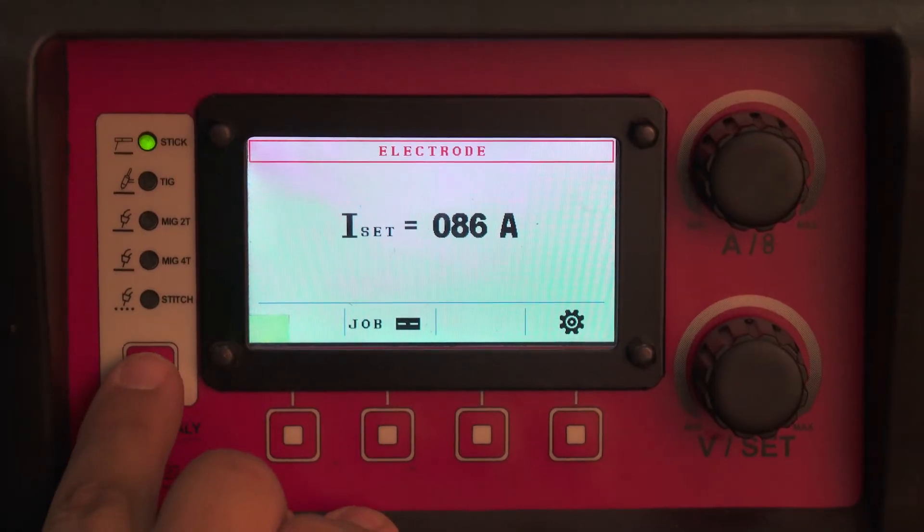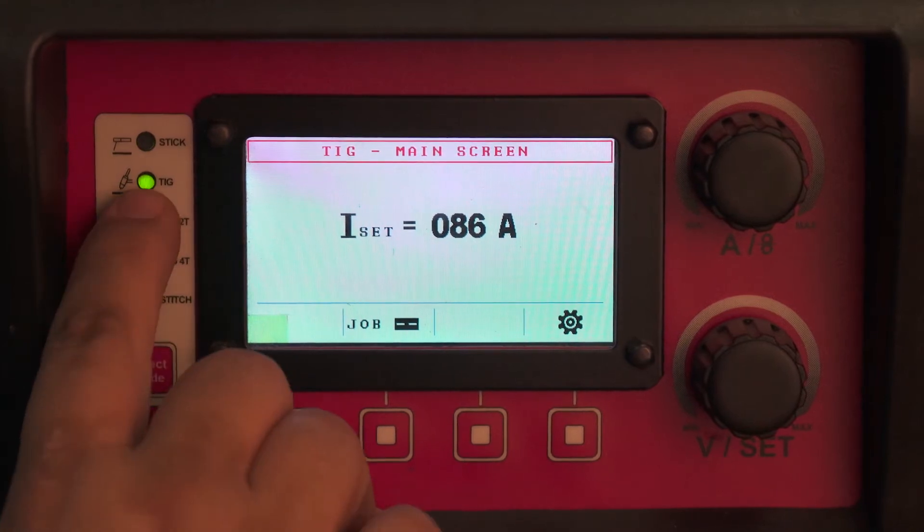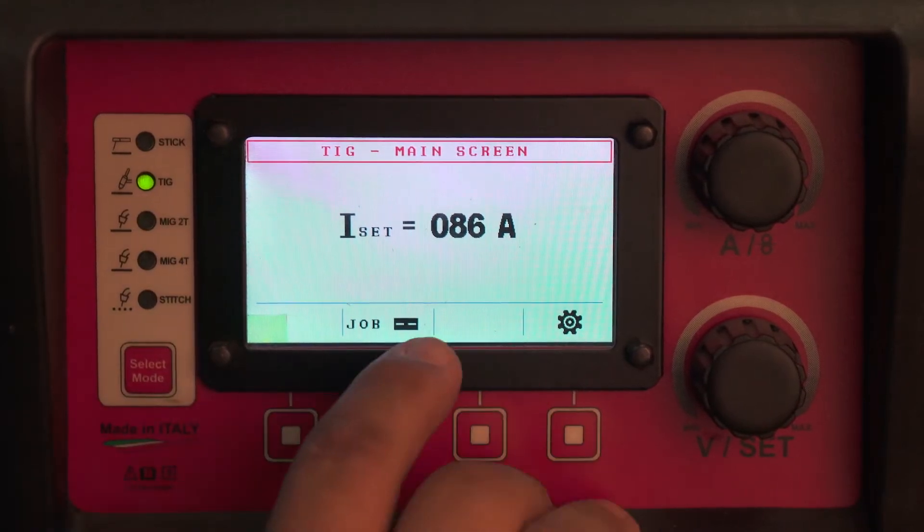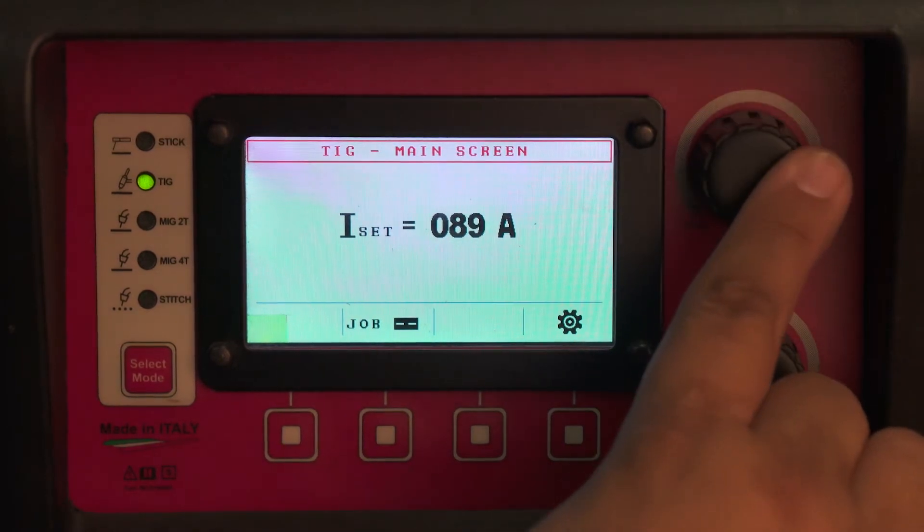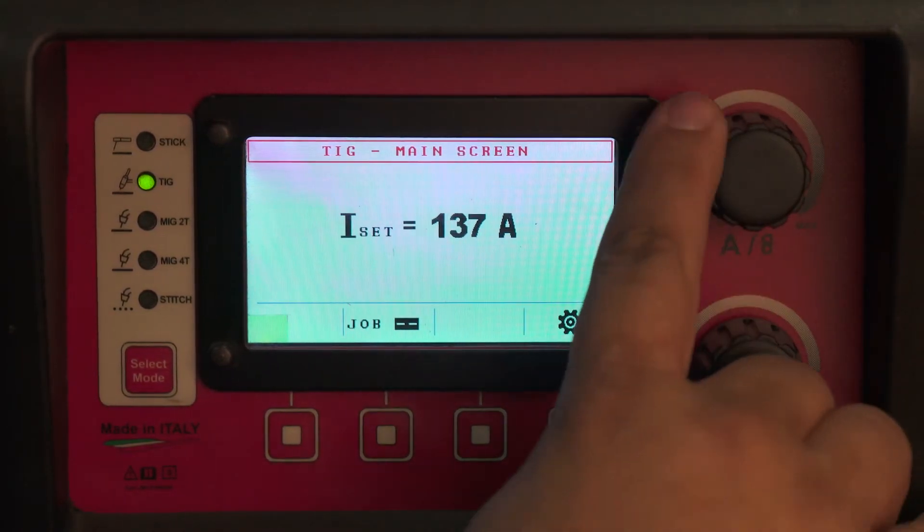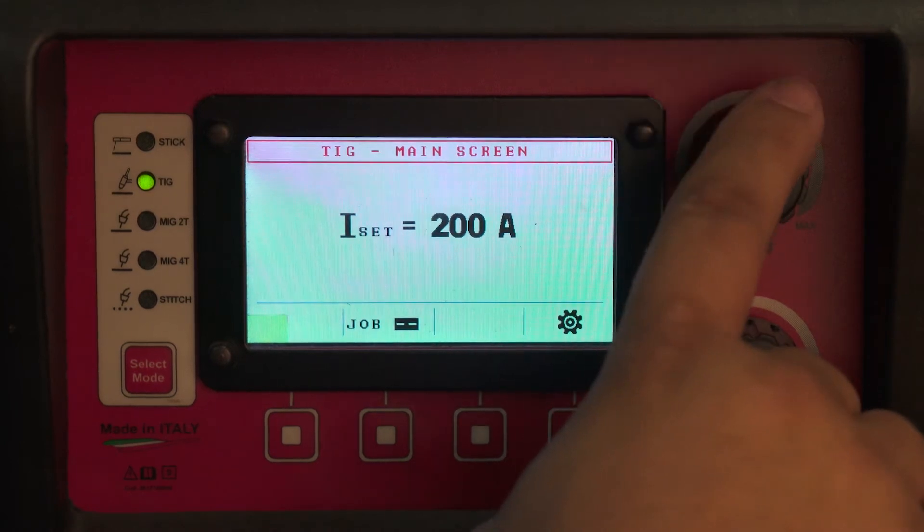If you wish to TIG weld, select TIG. This will show you the maximum amperage. You can set your maximum amperage anywhere from 4 to 200 amps.